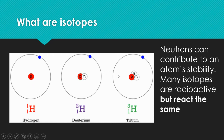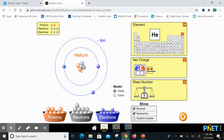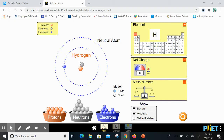Isotopes have the same number of protons but different numbers of neutrons. Hydrogen always has one proton, but it can have zero neutrons (mass = 1), one neutron — deuterium (mass = 2), or two neutrons — tritium (mass = 3). Going back to the simulation, deuterium with one proton and one neutron is stable, but tritium with one proton and two neutrons is unstable and actually radioactive.